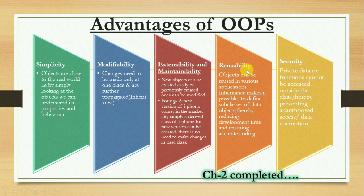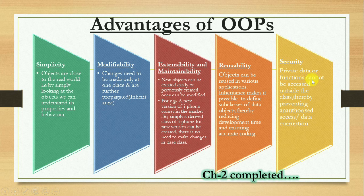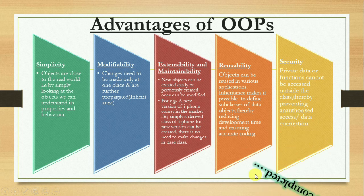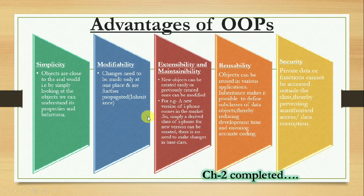Reusability: objects can be reused in various applications. Inheritance makes it possible to define subclasses of objects, reducing development time and ensuring accurate coding. The last advantage is security — private data or functions cannot be accessed outside the class, thereby preventing unauthorized access or data corruption. With this, chapter number two is completed. Some concepts will be learned further with practical implementation in the next video. Thank you.